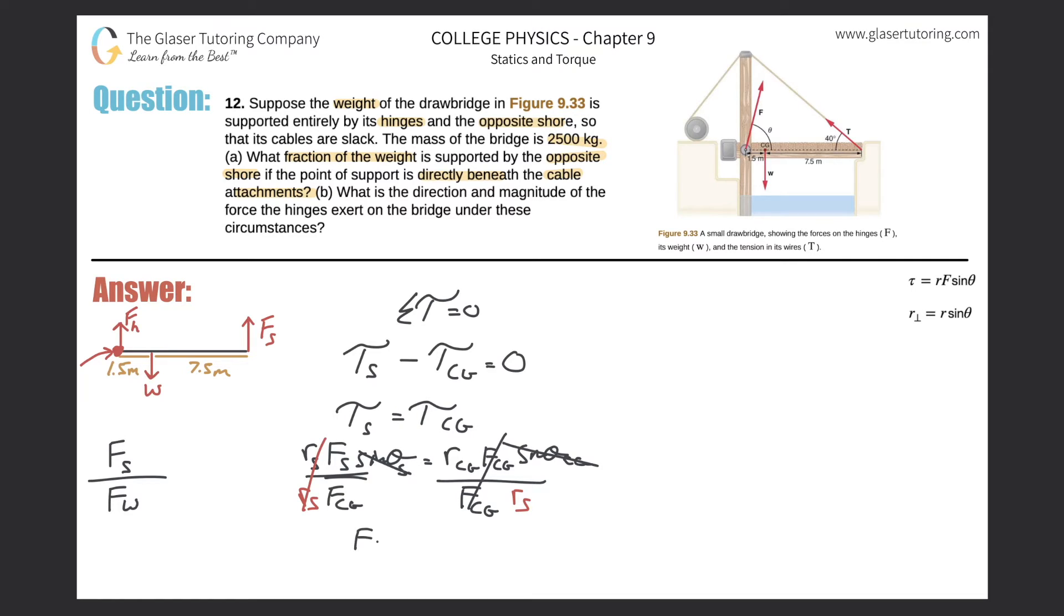And what we're left with is that the fraction, right, of the weight supported by the shore to the total weight will be equal to the lever arm of the center of gravity divided by the lever arm to the shore from the axis of rotation. Isn't that quite interesting? It's so simple. It works out to such a nice little fraction.